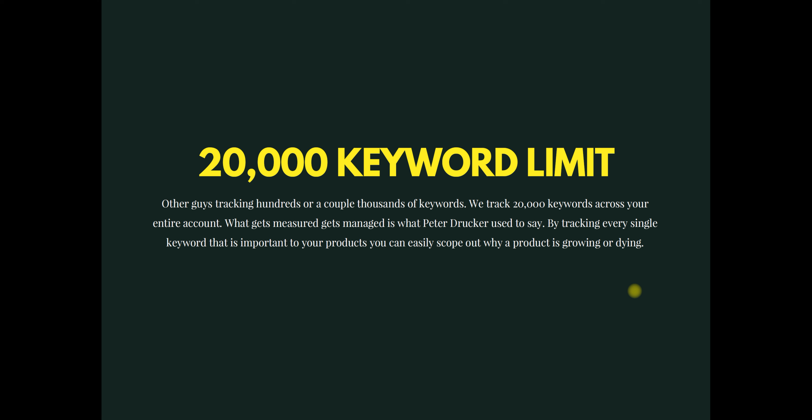Other sites limit you to a couple hundred or a couple thousand keywords. We don't do that, because we see so much value in lower volume keywords. Everyone else is focusing on the top 10 keywords — water bottle, insulated water bottle, plastic water bottle — while ignoring all the long-tail ones. What about 'water bottle plastic pink' or 'blue' or whatever the keyword may be? There's so much volume there. Water bottle might get 60,000 impressions a month, but all the other keywords getting 500 impressions a month — imagine if you ranked for all of them. That's why we give you a 20,000 keyword limit so you know exactly where you stand for lower and higher volume keywords.